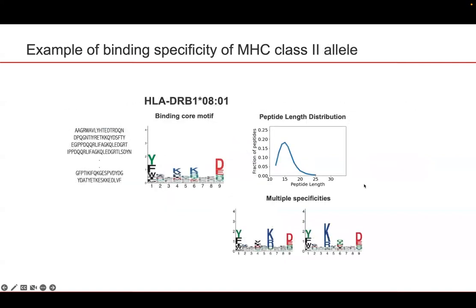Similarly for MHC class 2, as previously mentioned, MHC class 2 alleles bind long peptides but with a fixed binding core of 9 amino acids. We also provide the peptide length distribution for the allele, and we can see there is a high preference for peptides of length 15. When available, we provide different binding modes for the allele — for example, arginine and lysine can only bind in position 4 or 6 but not both positions at the same time, as shown in the first motif.